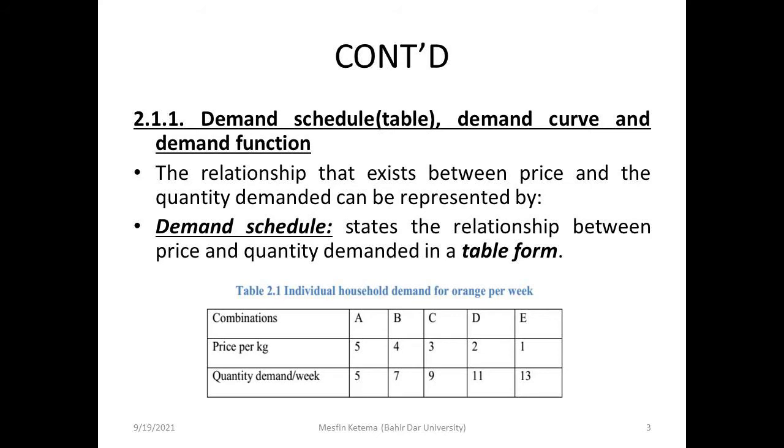Points A, B, C, D, E represent different price combinations. These are the combinations of the relationship between price and quantity demand in the table.